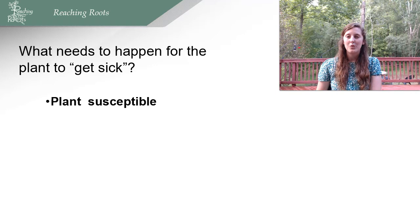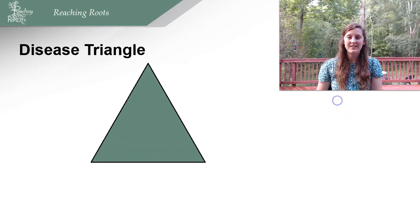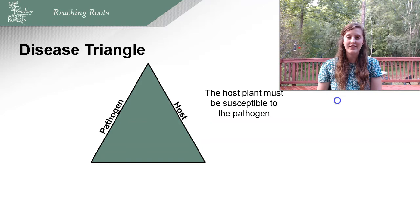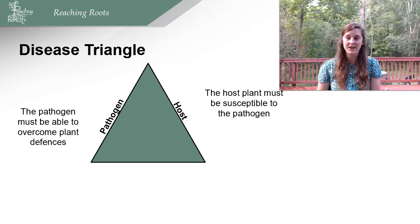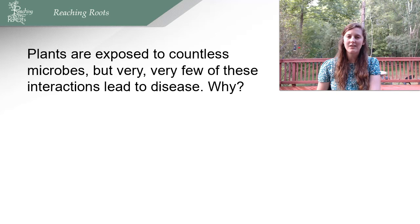The disease triangle has three components. The plant needs to be susceptible, meaning it can get that disease. The pest must be present, and the proper environment must occur — the environment benefits the pest just as much as the plant. The host plant must be susceptible to the pathogen, the pathogen must be present and able to overcome the plant's defenses, and the environment must tip the balance in favor of the pathogen. If you have all three, disease will occur. Plants are exposed to countless microbes, but very few interactions lead to disease because all three things have to occur and plants have incredible immune systems.